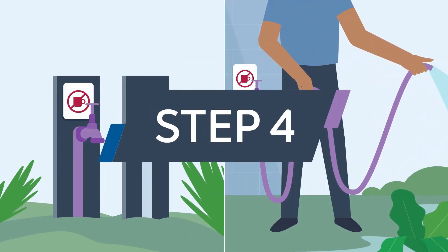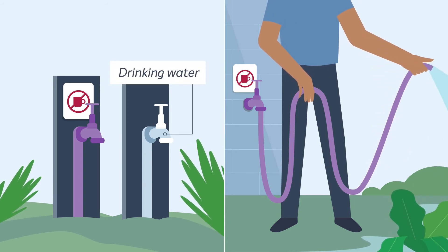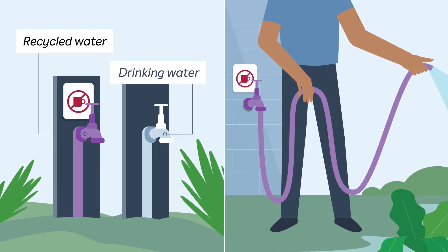Step 4. Turn on all outside taps. The external drinking water tap should run dry. The recycled water tap should continue to run.